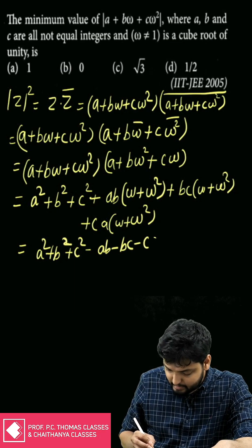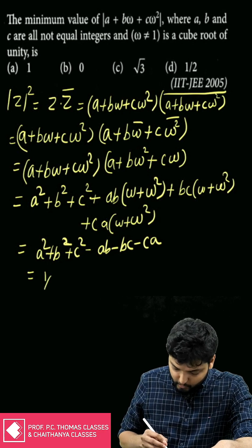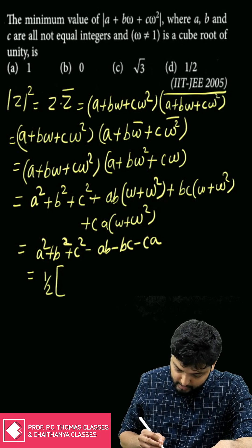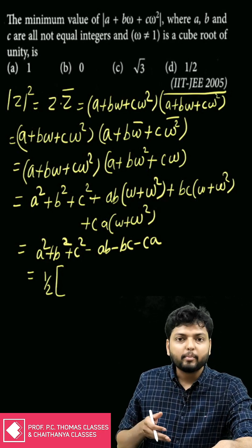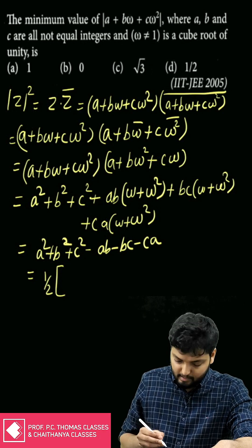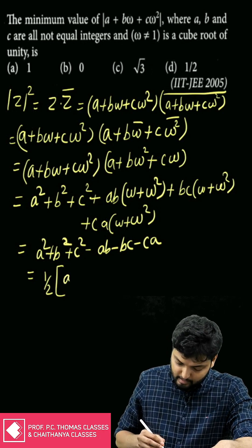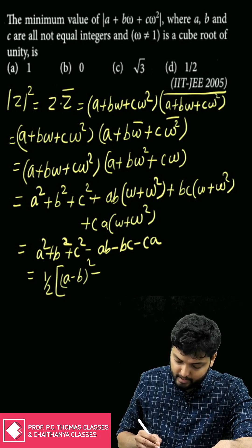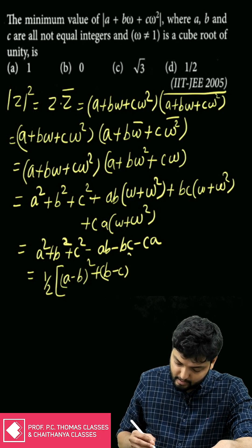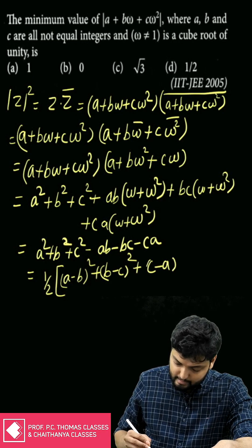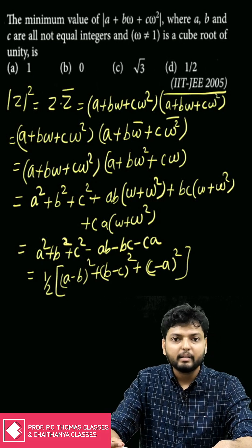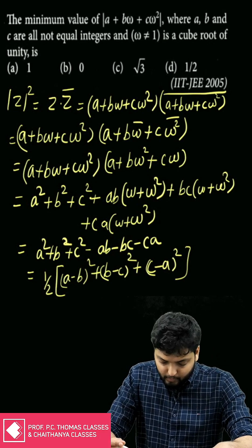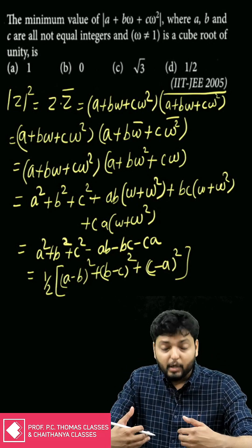This is equal to one-half of (a − b)² + (b − c)² + (c − a)². That is the expansion that comes to mind when you see a² + b² + c² − ab − bc − ca. So this is what we need to minimize: |z|² = ½[(a − b)² + (b − c)² + (c − a)²].